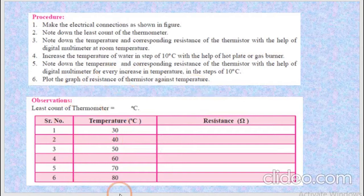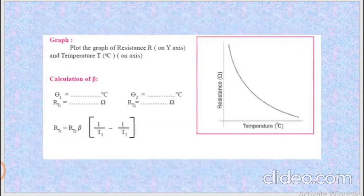After the gap of each 10 degrees Celsius, we are going to take 5 or 6 different readings. You can see it in observation table. Here we want the least count of thermometer and after each 10 degrees Celsius, we are going to note down the resistance value.